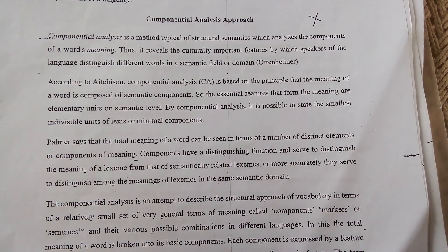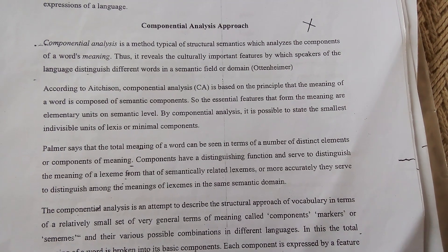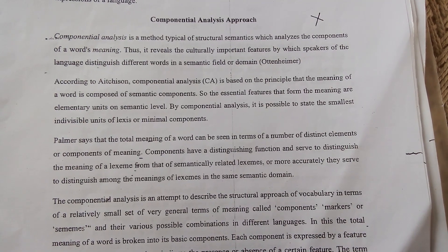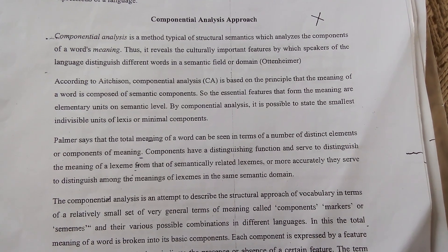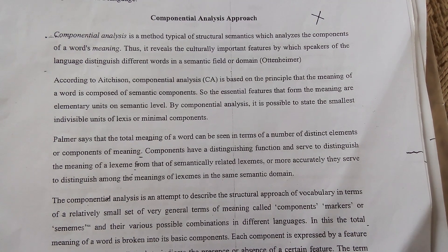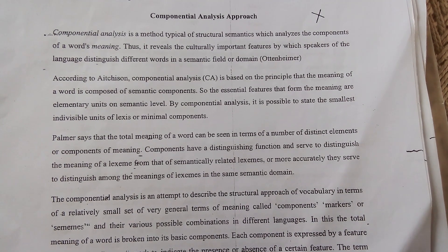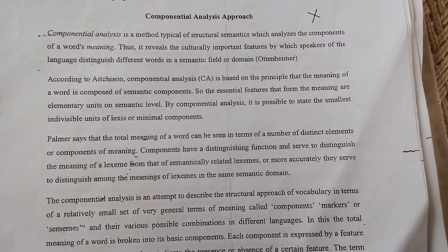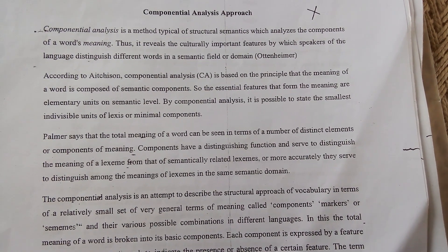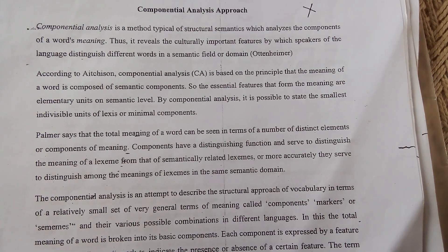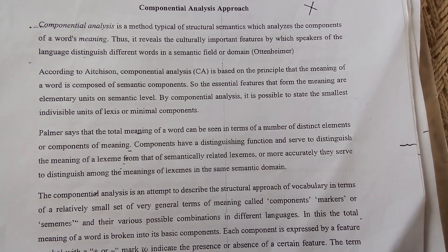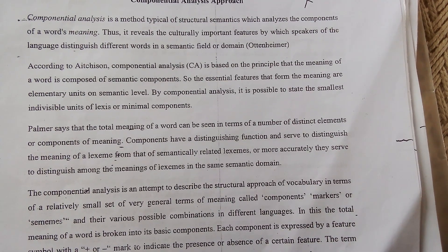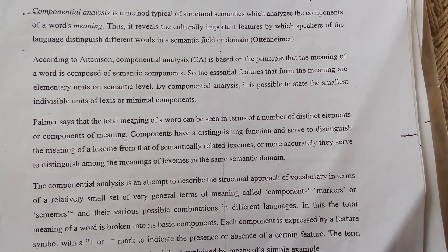Componential analysis reveals the culturally important features by which speakers of a language distinguish different words in a semantic field or domain. According to the definition, componential analysis is based on the principle that the meaning of a word is composed of semantic components — the essential features that form meanings are elementary units on a semantic level. By componential analysis it is possible to state the smallest minimal components. Palmer says that the total number of words can be seen in terms of a number of distinct elements or components of meaning.